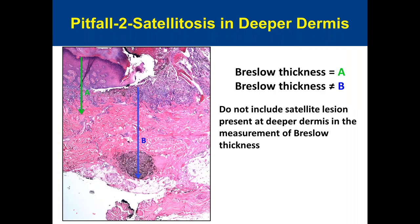Pitfall 2: satellitosis. If satellitosis is present, you should not measure all the way down to that focus. Instead, find another invasive melanoma cell and measure from the granular layer to that point. The correct tumor thickness measurement excludes satellitosis. Similarly, you are not supposed to include lymphovascular invasion in the thickness measurement, even if present at the deeper dermis.